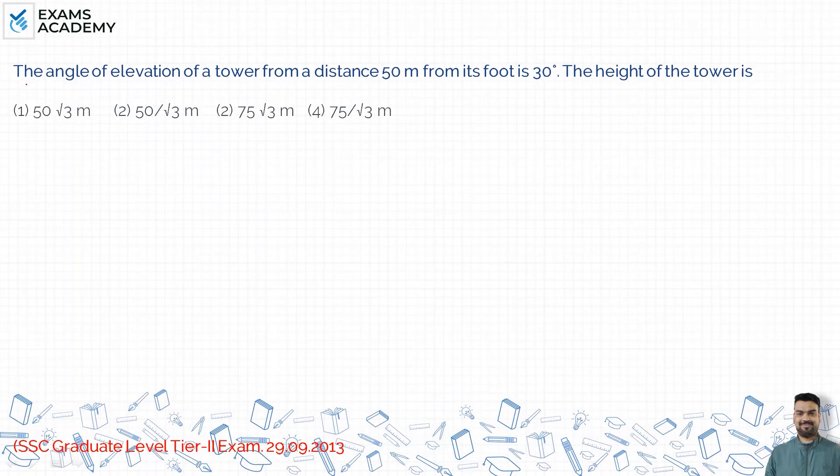Hello friends, a question here is trigonometry height and distance. The angle of elevation of a tower from a distance 50 meters from its foot is 30 degrees. The height of the tower is?